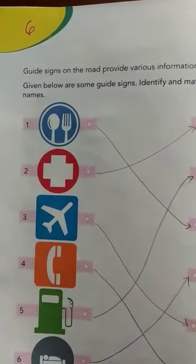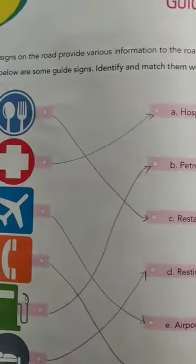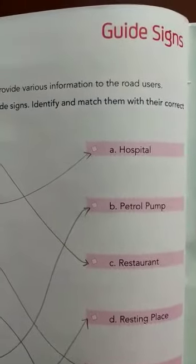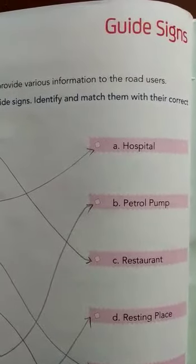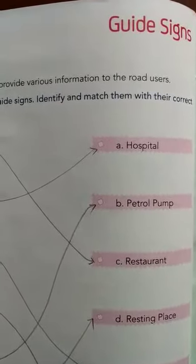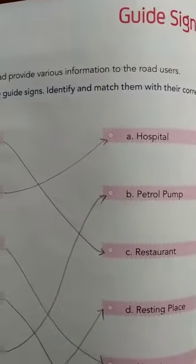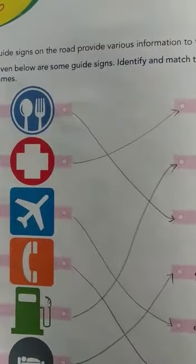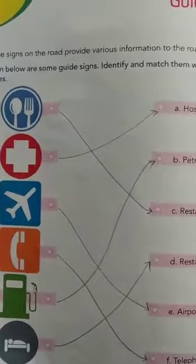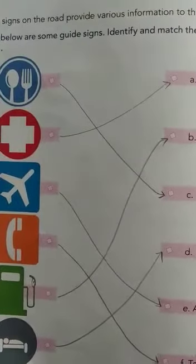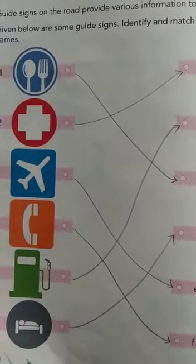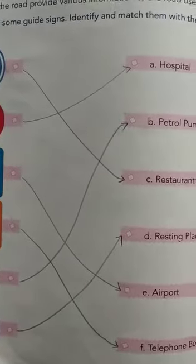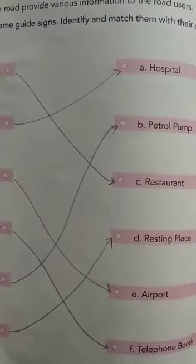Now exercise number 6 is: Signs — Guide Signs. In this exercise we discuss about the signs. Some signs are given along with their names, and we match these signs with their names.